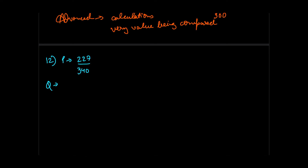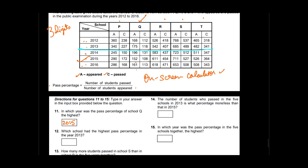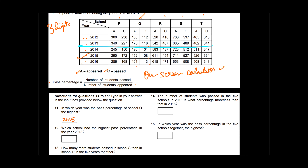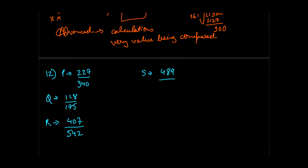The fractions for 2013 are: school P = 227/340, school Q = 118/175, school R = 407/542, school S = 489/685, and school T = 341/482. Now we can apply fraction comparison skills to avoid dividing all five.